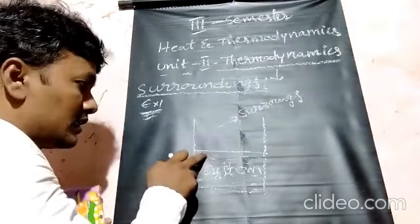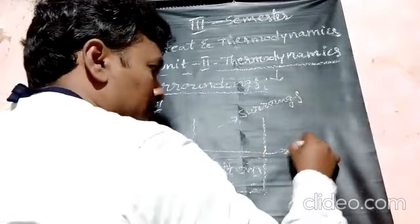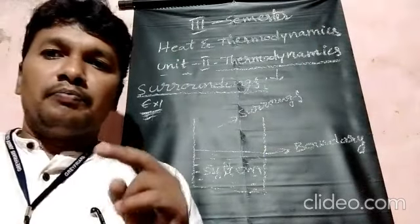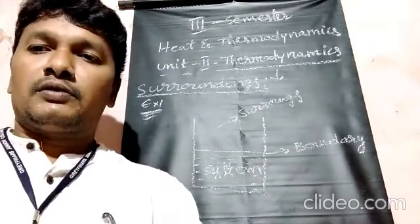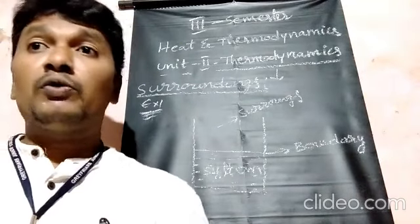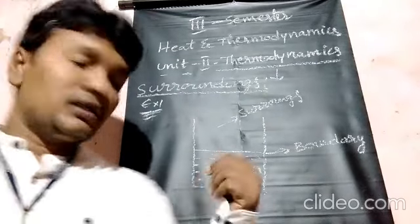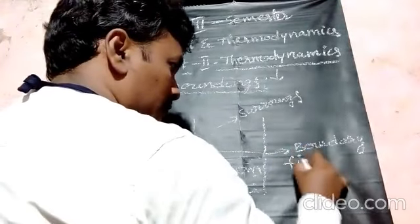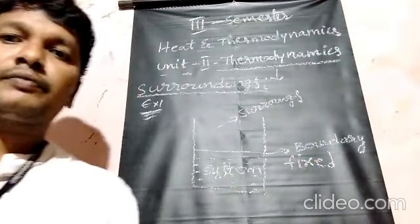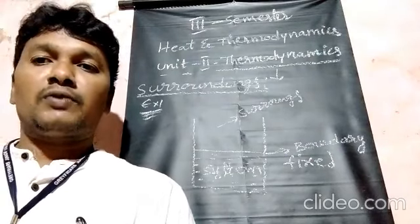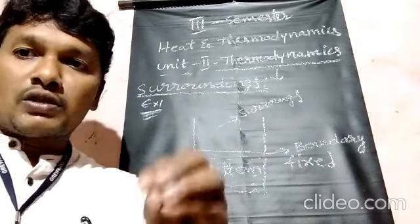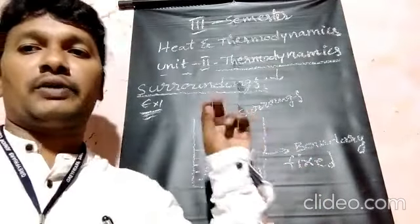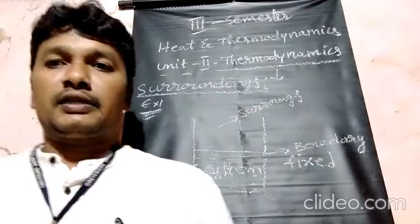The separation between the system and surroundings is called the boundary. Boundaries are mainly of two types: the first is fixed boundary and the second is movable boundary. In the bucket example, when a fixed amount of water is filled in a bucket, the boundary remains constant — this is a fixed boundary.